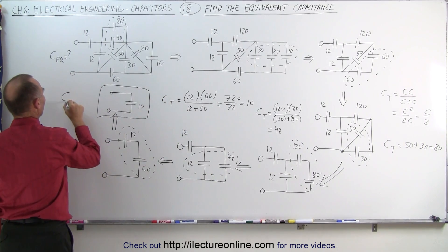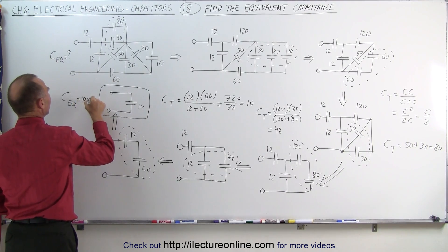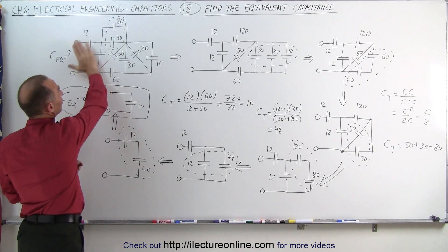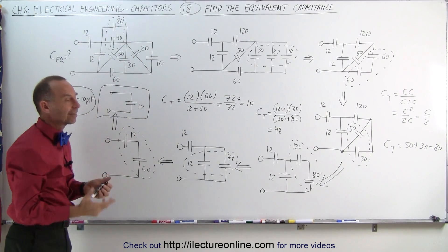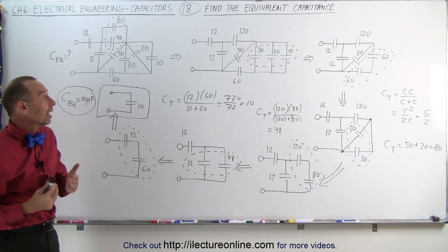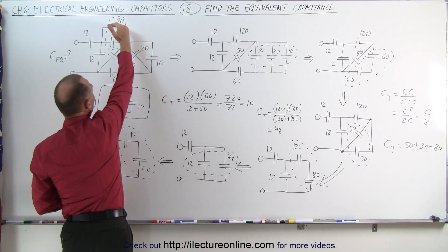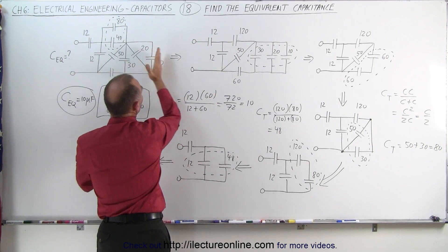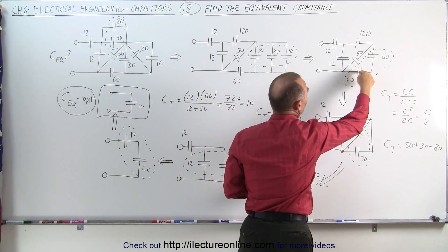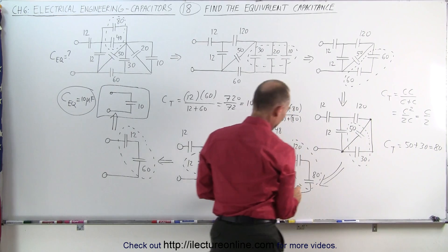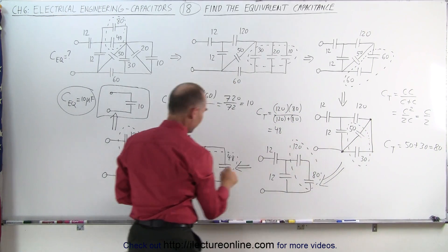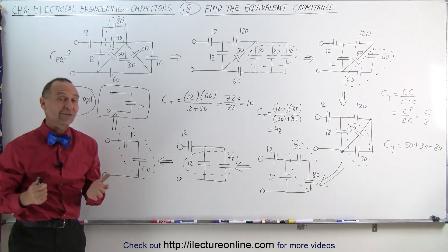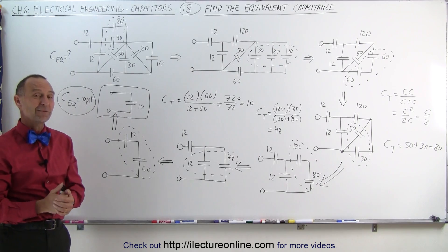C equivalent equals 10 microfarads, assuming all capacitors are in microfarads. This single capacitor has the exact same electrical properties as the entire circuit. The methodology is: start from the back, the top, the outlying regions of the circuit. These were in parallel — combine them. Then three in parallel — combine those. Those two in series — combine. Two in parallel — combine. Two in series — combine. Two in parallel — combine. Two in series — combine. And that's how you finally get to the final equivalent capacitance. That's how it's done.